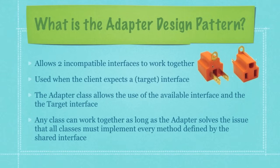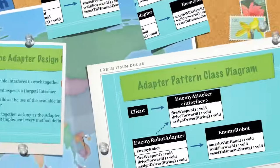You're going to use the adapter pattern whenever the client expects to use a target interface — which in this situation would be a two-pronged plug. However, you have a three-prong plug, and that's what the adapter is going to do: convert the three-prong into the two-prong. The adapter class is going to allow you to use any available interface that makes sense with the target interface.